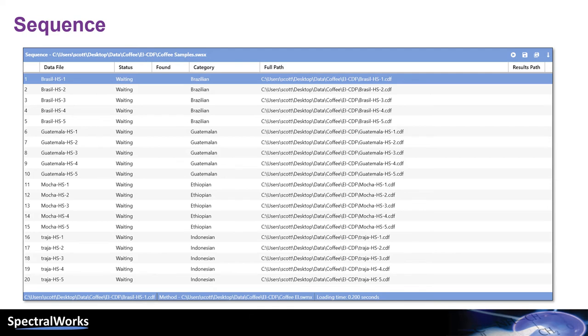If we put the slides together, we can see how easy it is to process the data. First, we loaded the data files into Analyzer Pro XD to create the sequence. Then we added category information. Finally, we clicked on the process button.